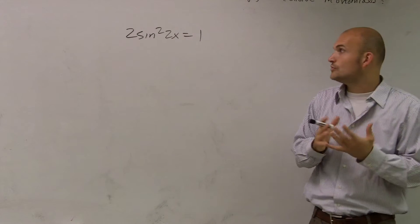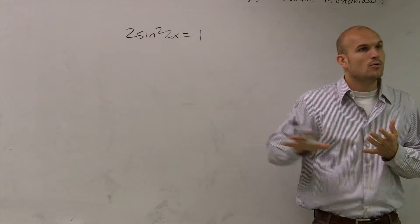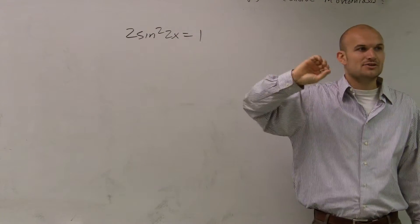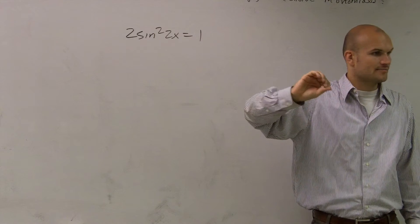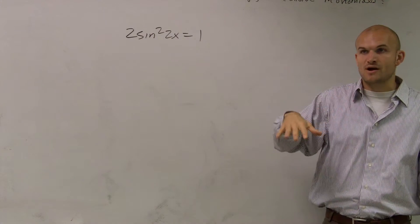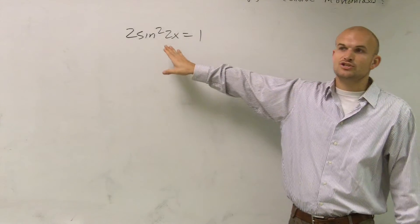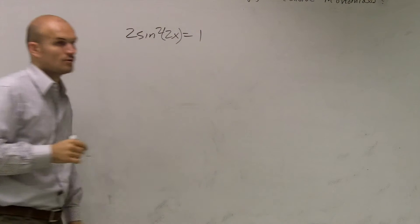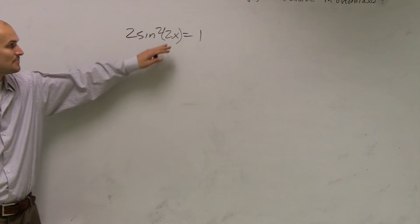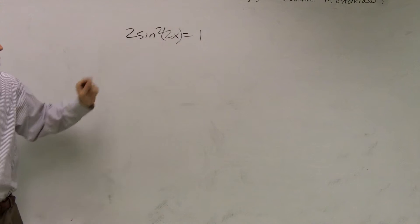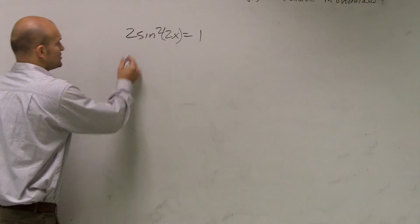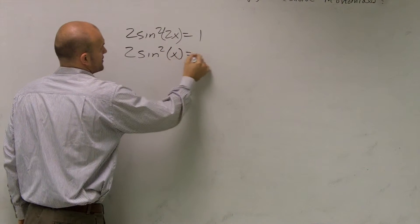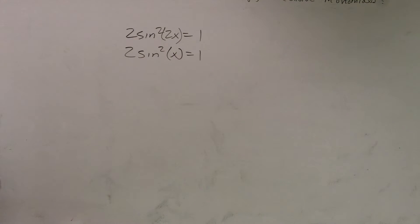So if you guys have 2 times sine squared 2x, one thing I want you guys to remember, when you have that 2x inside your function, I want you guys to kind of forget about it for right now. As far as we're worrying about solving for our x values, I don't want you to solve for this because this is inside of your function. Okay?